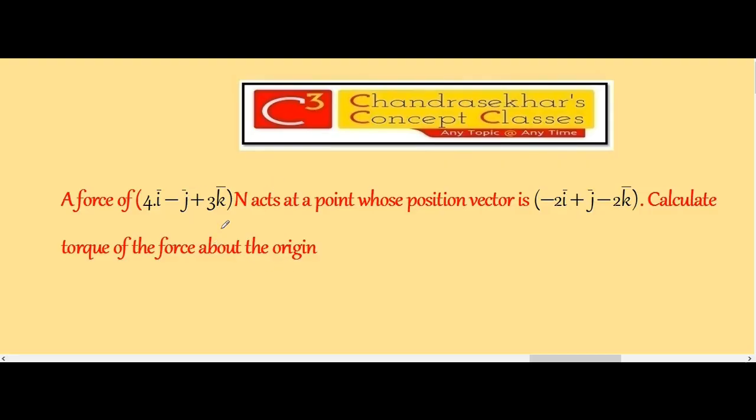A force of 4î - ĵ + 3k̂ Newton acts at a point whose position vector is -2î + ĵ - 2k̂. Calculate the torque of the force about the origin.